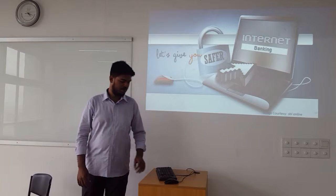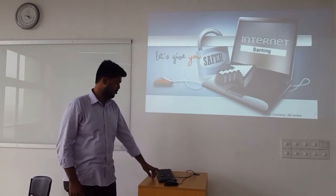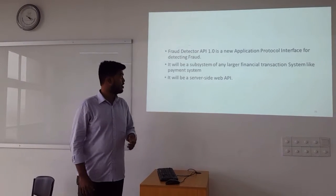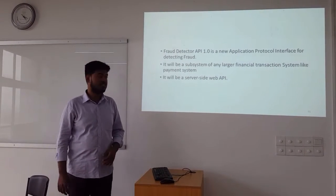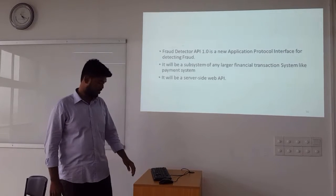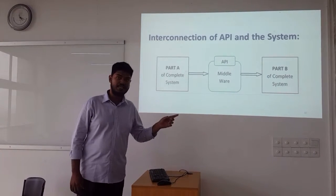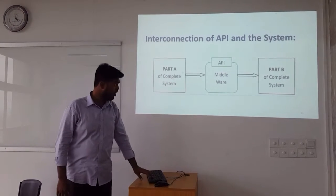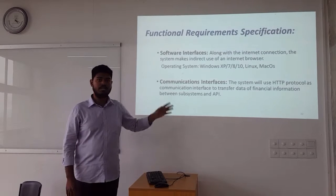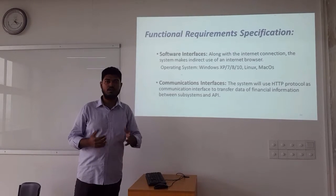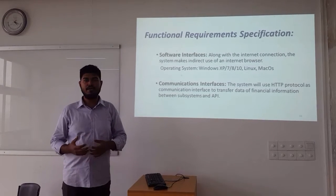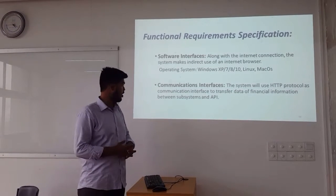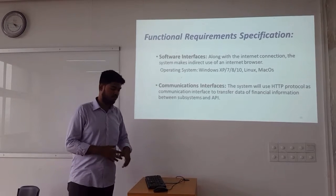Hello everyone, I am Atiklislam. I am going to talk about the specification. We are going to build an API, version 1.0. It is a subsystem of a larger financial system and is a server-side API, acting as middleware between two different concrete subsystems. The software interface supports Windows HD, Windows 7, or modern operating systems, Mac OS, and other platforms. The communication interface uses the internet and HTTP protocol, through which the API will operate.